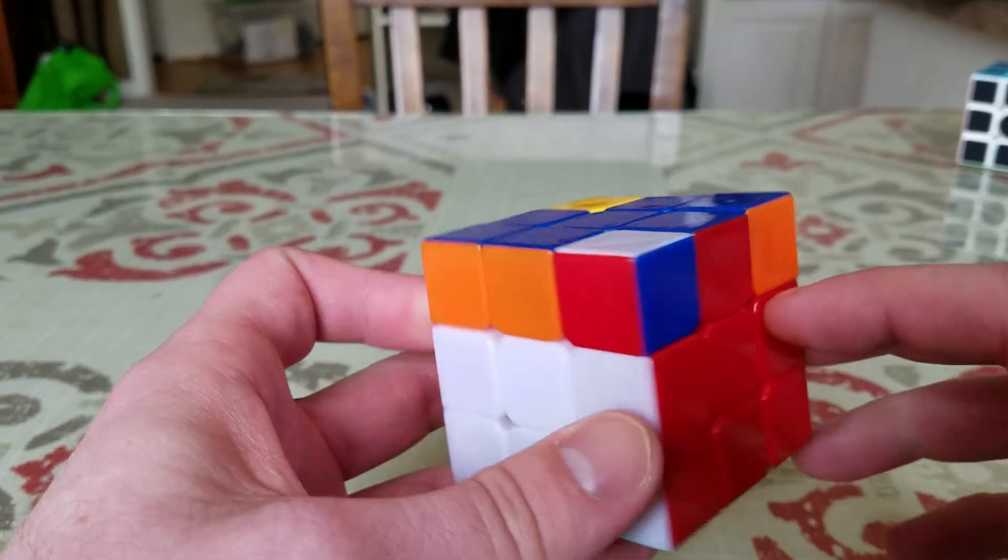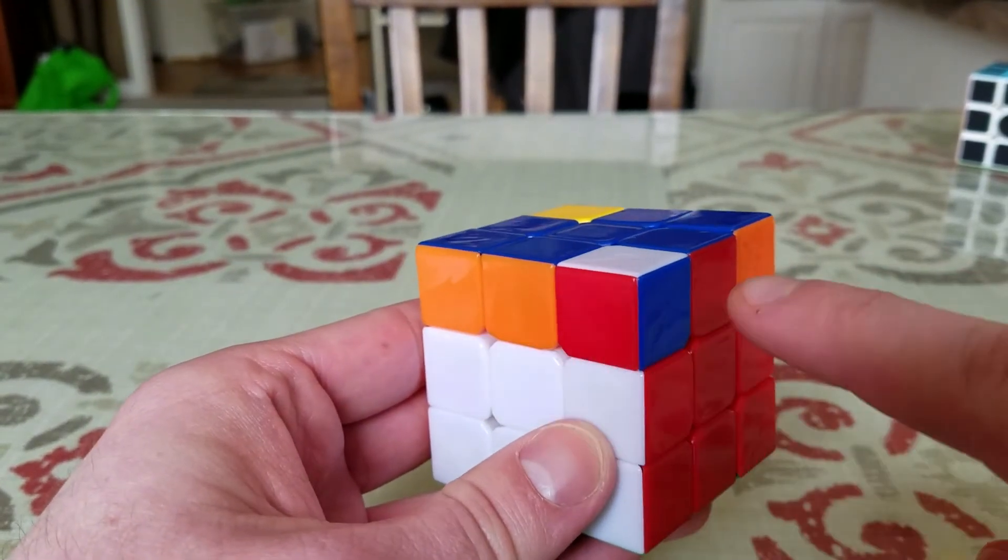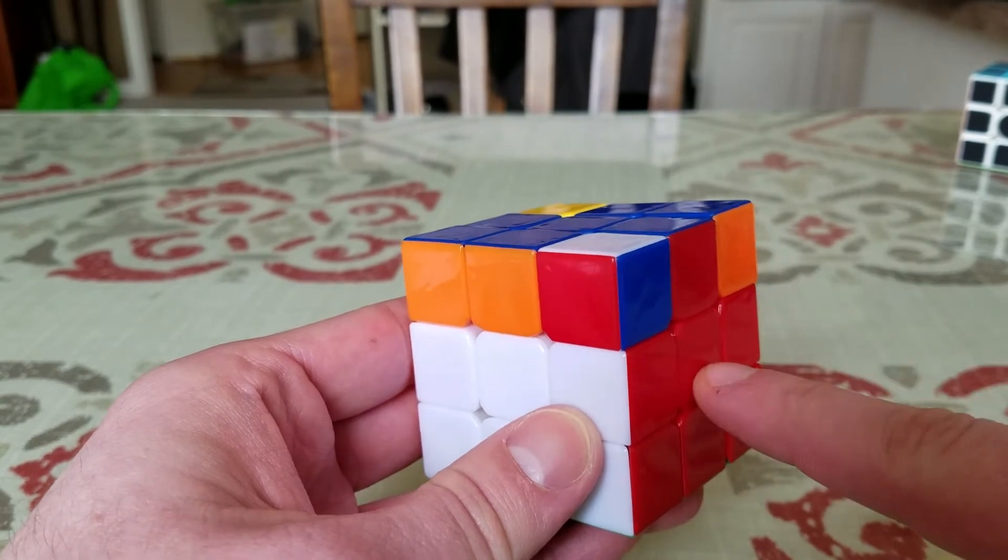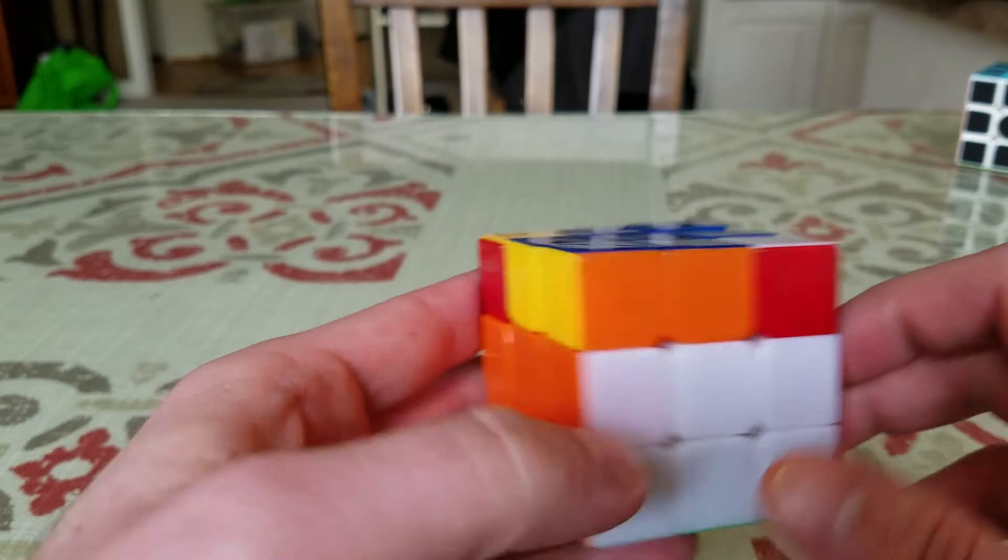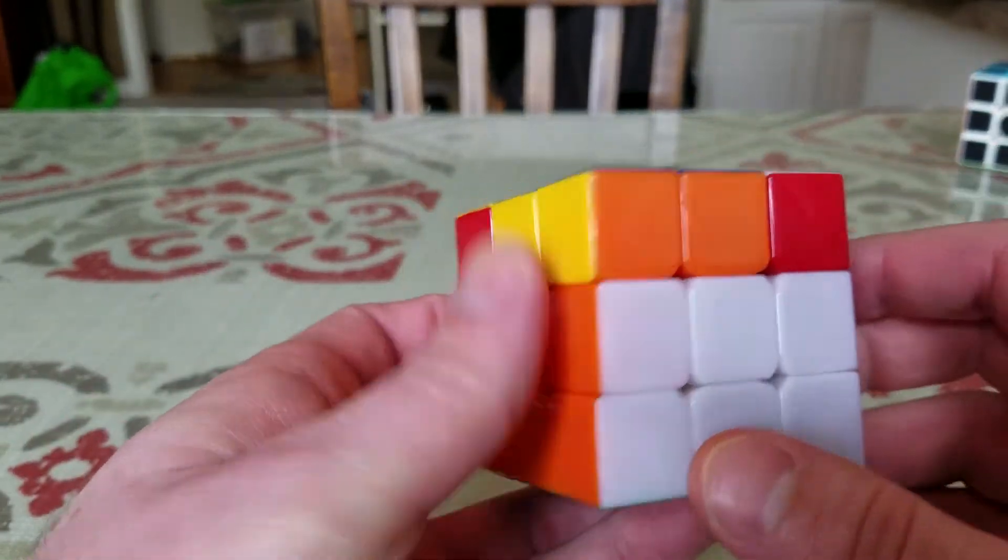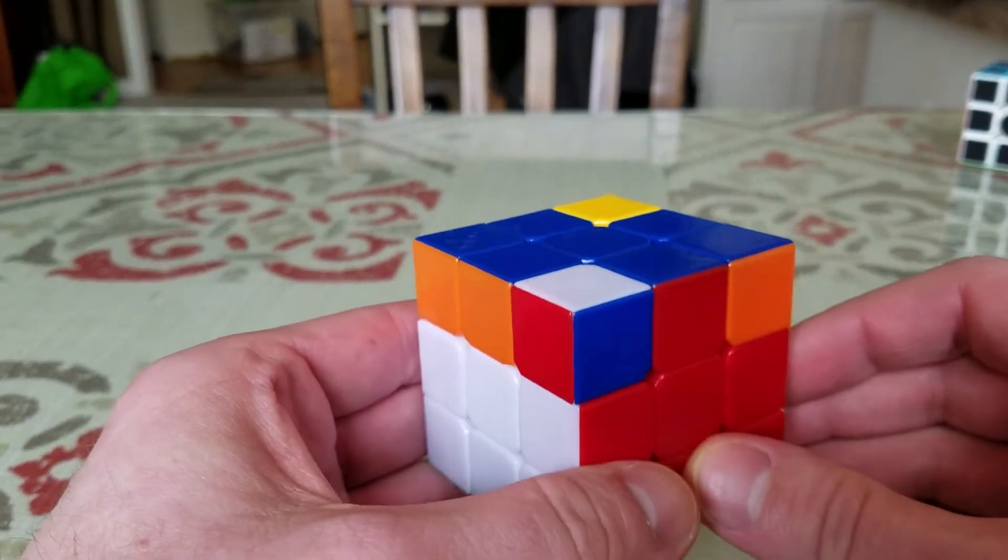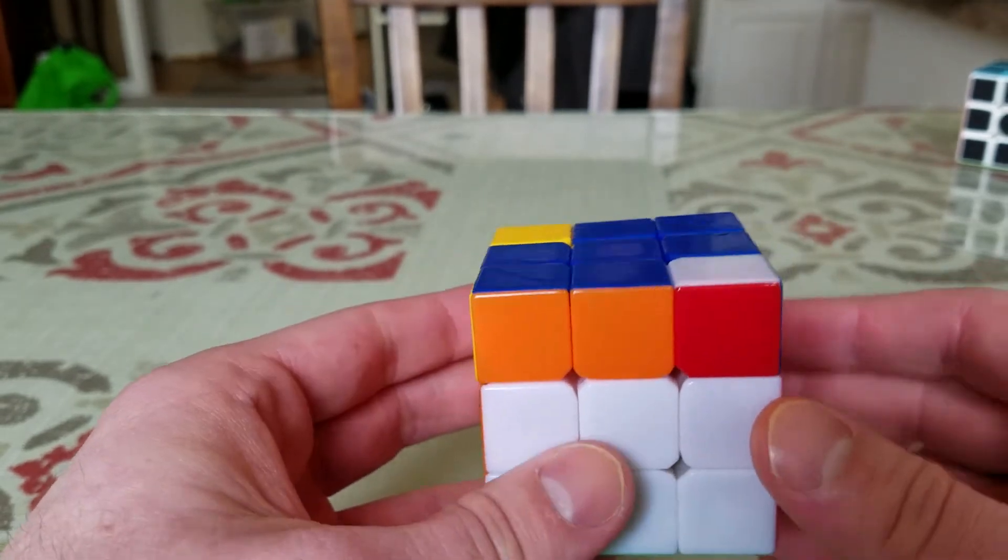What you're going to look for is two sides that are next to each other that are correct. In this case, the red and white are not correct. If I check the yellow, those are not correct either. So this is not a good starting position, and I'm going to turn the cube.